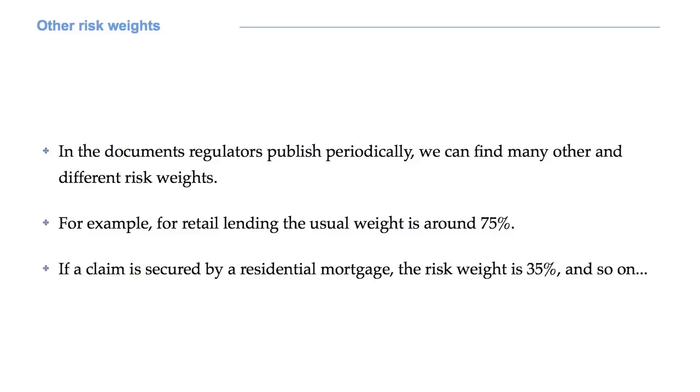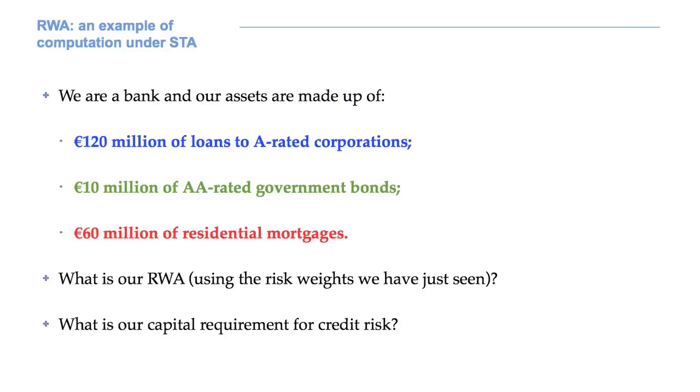In the documents regulators publish periodically, we can find many other and different risk weights. For example, for residential mortgages, the risk weight is usually around 35 percent. Okay, let's consider an application.